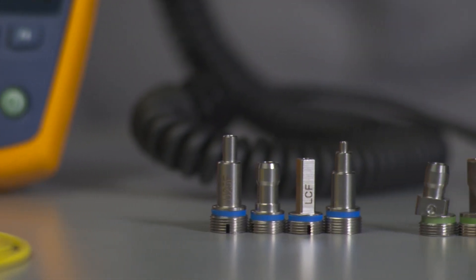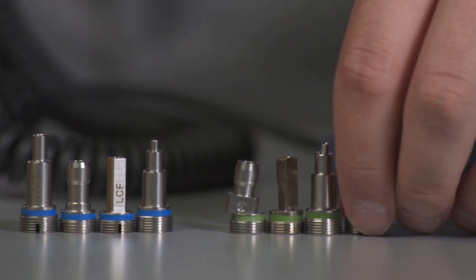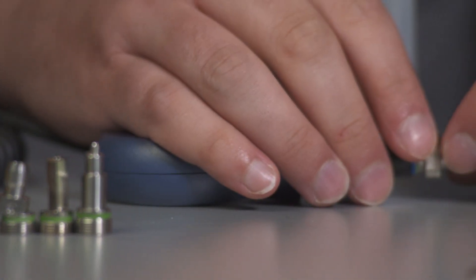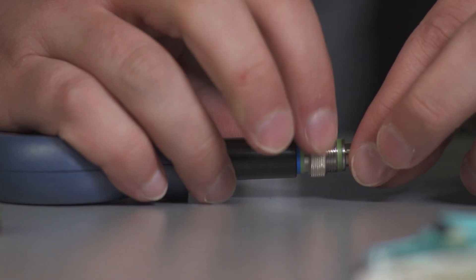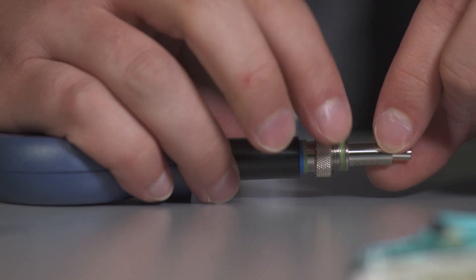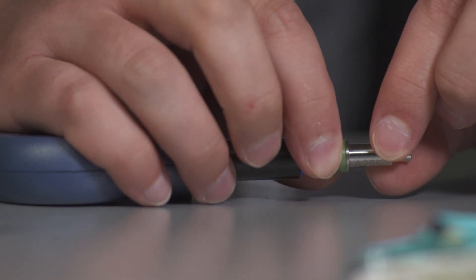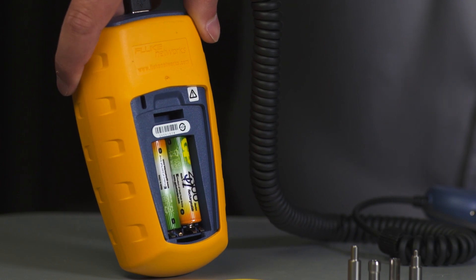The Fi500 comes with four interchangeable UPC tips. APC tips are available as well. This allows the Fi500 to work with nearly any port or cable, and it operates off of rechargeable AA batteries.